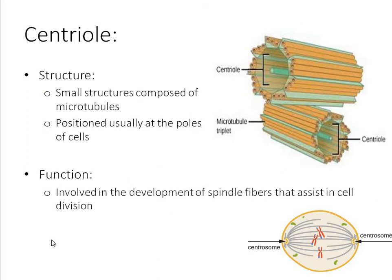Moving along, we've got our centrioles. These are small structures composed of microtubules — essentially building rods that exist around the cell. Centrioles are positioned at the poles of the cell, the two ends, as shown in the diagram. Functionally, they are involved in the development of spindle fibres and assist in cell division. The two centrioles at the north and south poles of the cell create fibres that push against each other, allowing the cell to line up chromosomes and divide evenly.